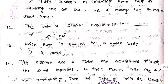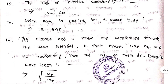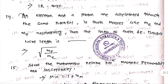The unit of specific conductivity is ohm⁻¹ cm⁻¹. Which rays are emitted by the human body? An electron and a proton are accelerated through the same potential.